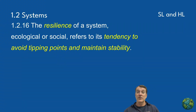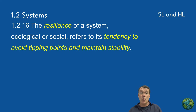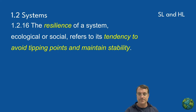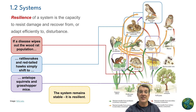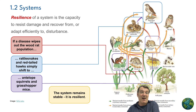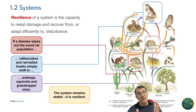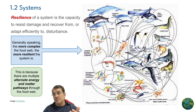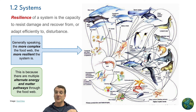Resilience refers to a system's ability to resist damage and recover from disturbance while maintaining its core function and structure. In both ecological and social systems, resilience helps avoid tipping points and maintain stability. For example, in a desert ecosystem, if disease reduces the wood rat population, predators like rattlesnakes and hawks might shift their diet to other prey species such as squirrels and mice. This flexibility allows the ecosystem to maintain its overall structure and function despite the disturbance. Generally speaking, the more complex a system is, with more diverse components, it tends to be more resilient.